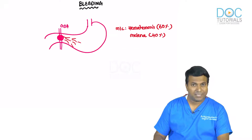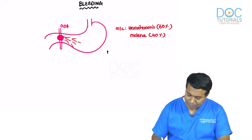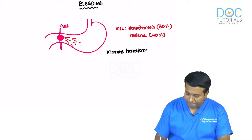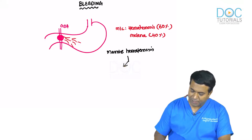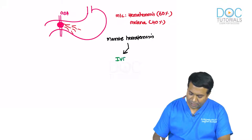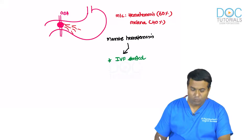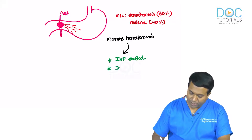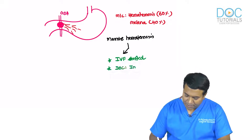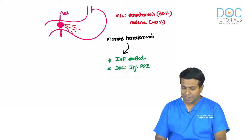The patient presents with massive hematemesis. Immediately start an IV line and IV fluids. The drug of choice for bleeding duodenal ulcer is injection proton pump inhibitors — omeprazole or pantoprazole given IV infusion.